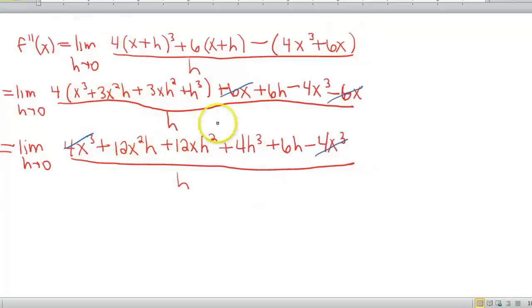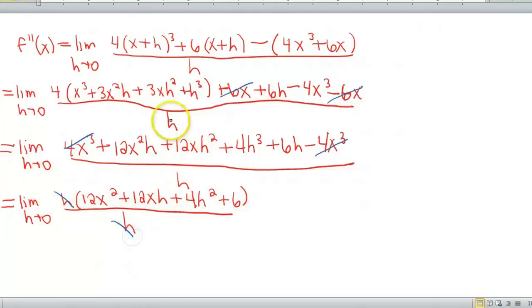And again, we can cancel our 4x cubes out. And we have 1, 2, 3, 4 terms left. They all have an h in them. So let's go ahead and factor that h out. So that leaves me with a 12x squared plus 12xh plus 4h squared plus 6. I lost my 4. And all of this is divided by h. Again, I can cancel my h's out. And we have a nice polynomial left in our parentheses. We can let h go to 0, so that's gonna wipe out my two middle terms. So my second derivative then is 12x squared plus 6.